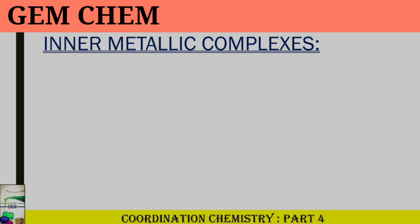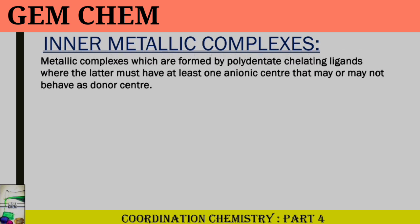So what do we mean by inner metallic complex? When a complex contains ligands which are both chelating and anionic, and the complex forms a chelate that is neutral, then these types of complexes are known as inner metallic complexes. These are formed by polydentate chelating ligands where the ligand must have at least one anionic center that may or may not behave as a donor center. These complexes are of three classes.